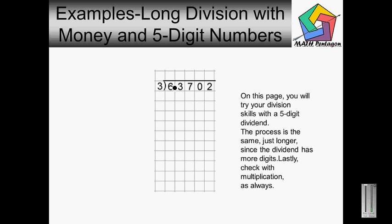Does three go into six? Yes it does. Three times two is six. Six minus six is zero. Bring down the three. Three goes into three one time. Three times one is three. Three minus three is zero.